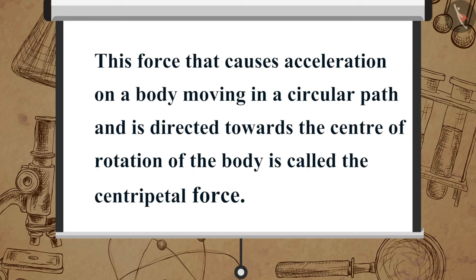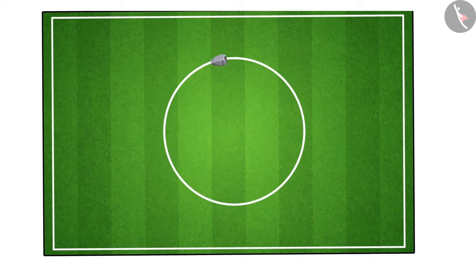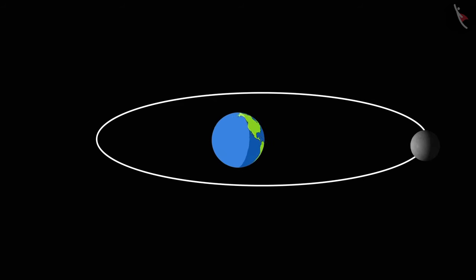This force that causes acceleration on a body moving in a circular path and is directed towards the center of rotation of the body is called the centripetal force. If there is no centripetal force, the stone will fly in a straight line forming a tangent to the circular path of the stone.